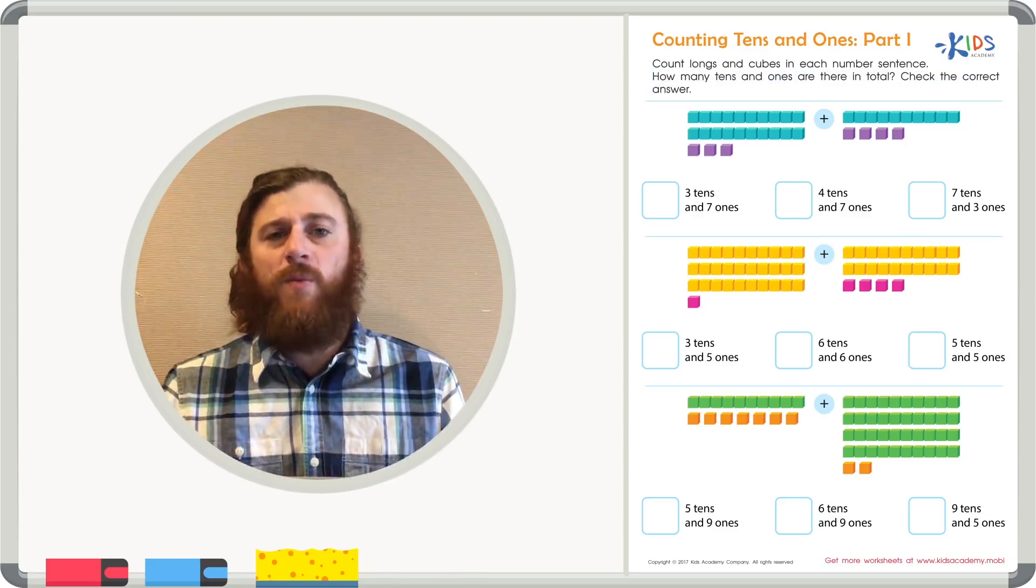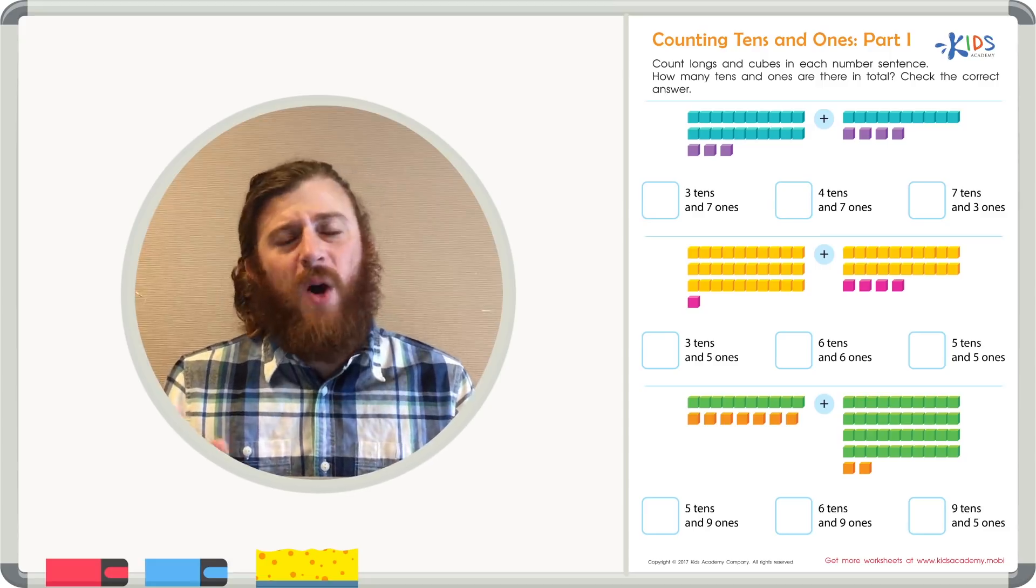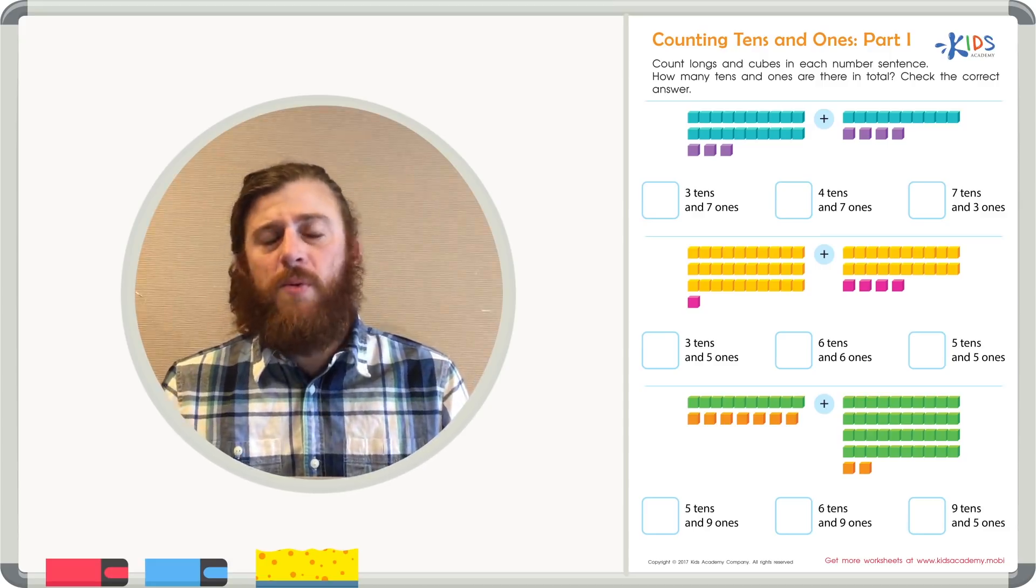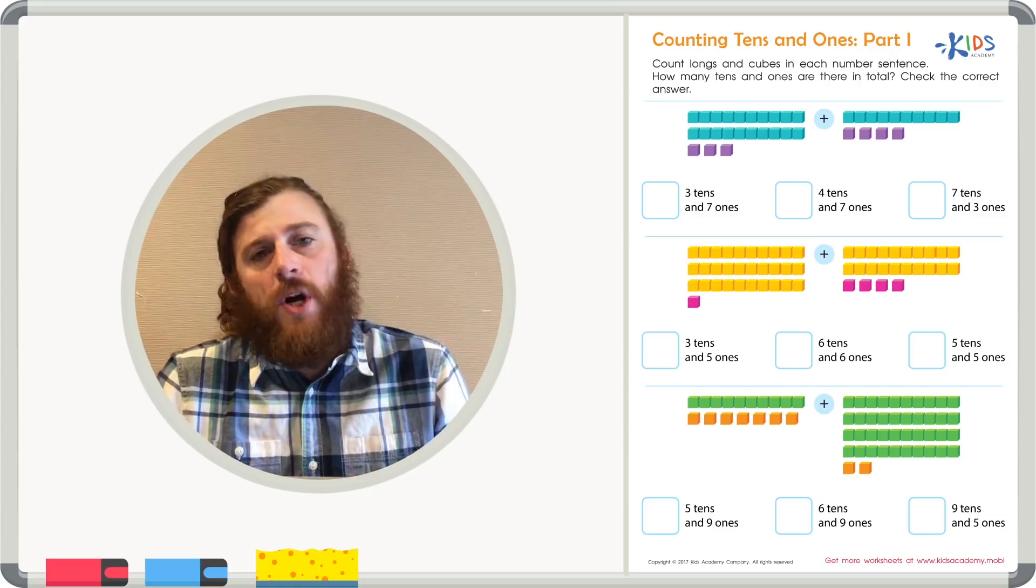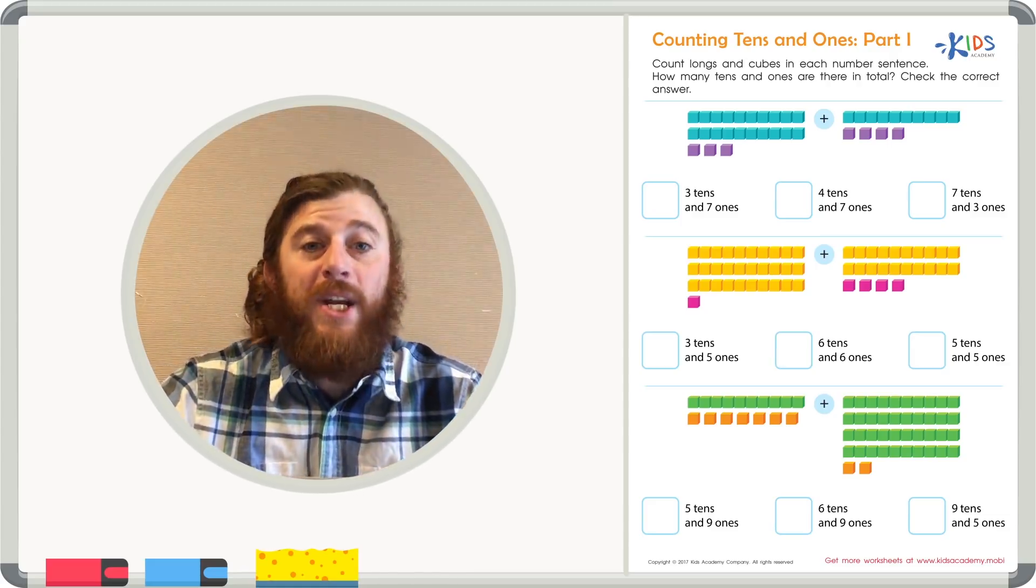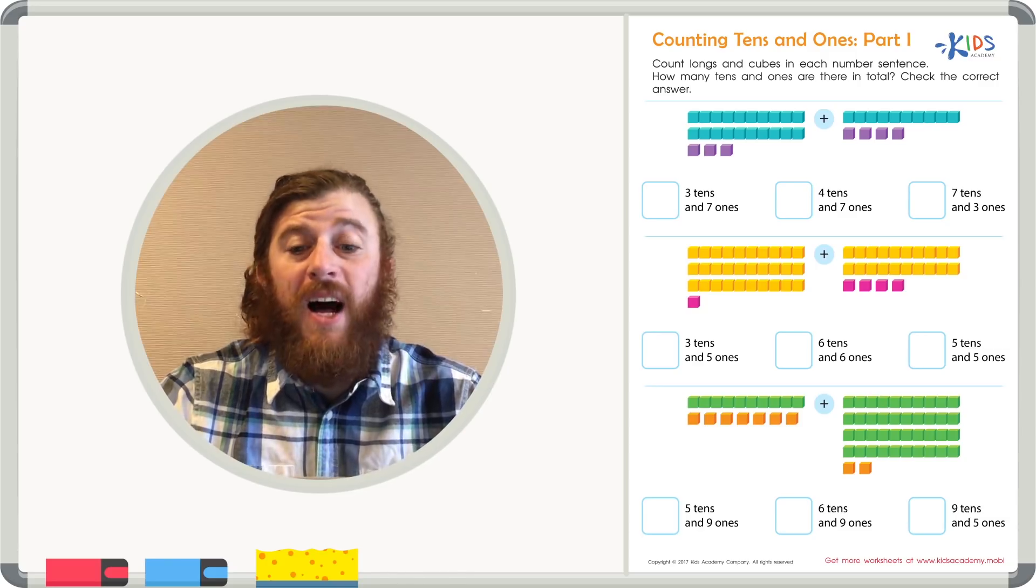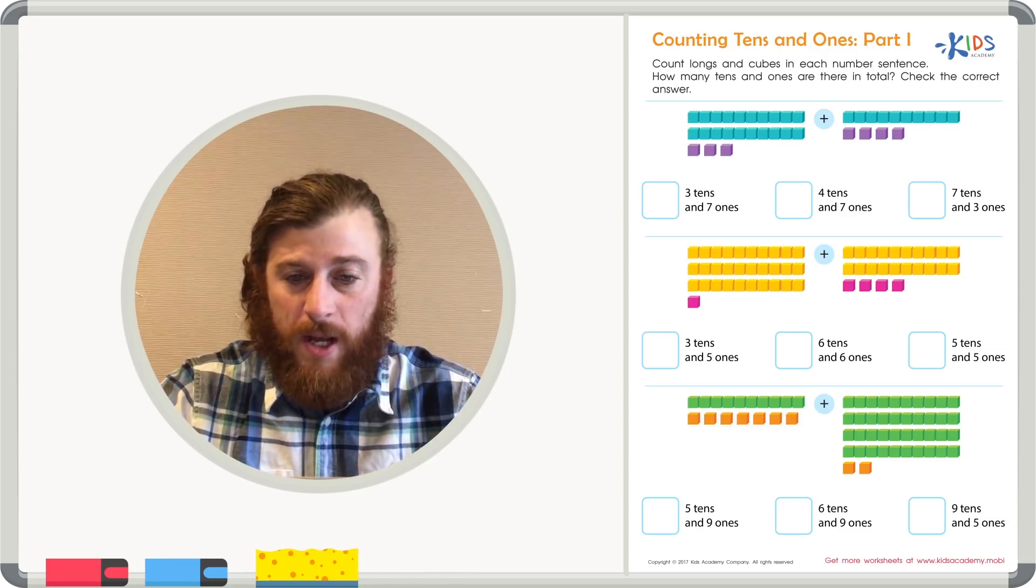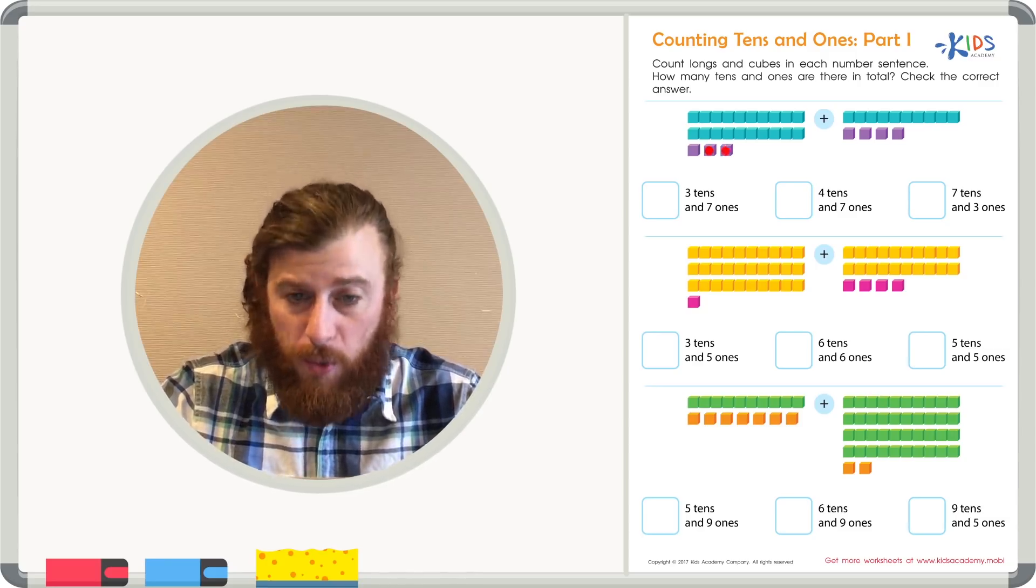When we're counting tens and ones, first, I always like to start with the ones because when we're adding normally, we always start with the place furthest to the right. So first, let's count the individual cubes. On the first side of the equation, we see one, two, three cubes.